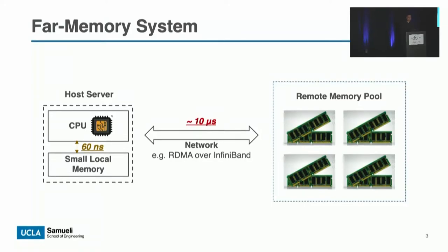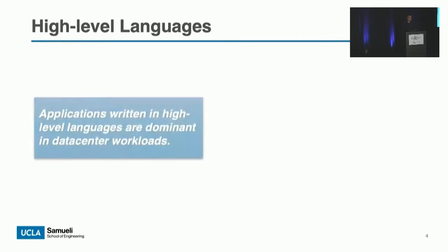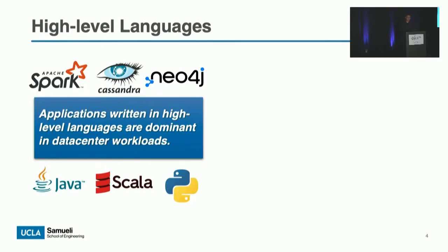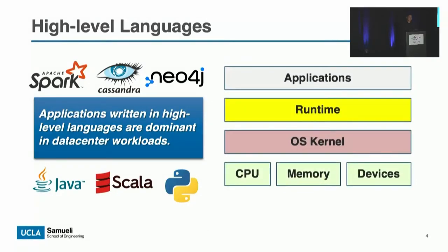Far memory is most widely used in data centers, where the dominant workloads such as Spark, Cassandra, or Neo4j are applications written in high-level languages such as Java, Python, or Scala. Although many far memory techniques have been proposed to reduce remote access frequency and hide remote access latency, almost all of those transparent techniques focus on OS-level optimizations and are agnostic to the runtime underneath applications written in high-level languages.